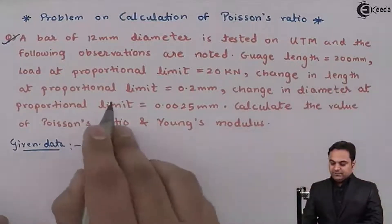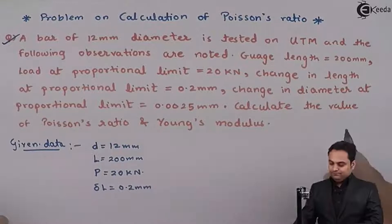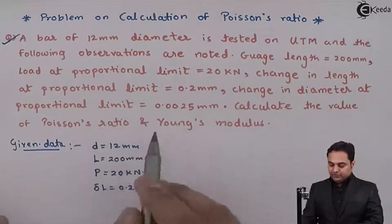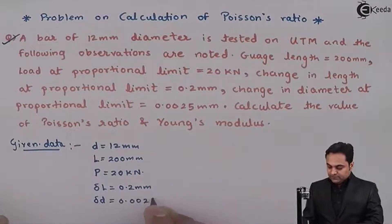Change in length at proportional limit is delta L equals 0.2 mm. Change in diameter at proportional limit is delta D equals 0.0025 mm.